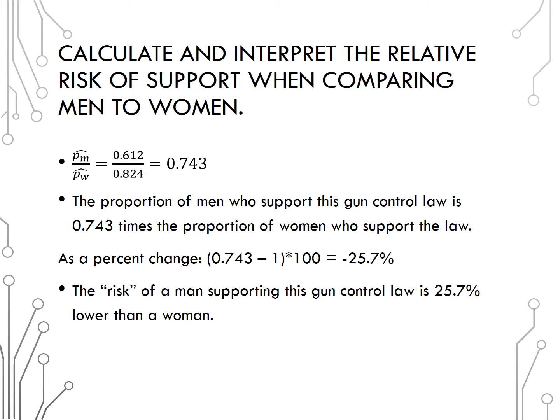Let's calculate and interpret the relative risk of support when comparing men to women. When calculating relative risk as group x compared to group y, you must use the division p hat x divided by p hat y. So in this calculation, the reciprocal would not be correct. In other words, we gave you the order of division in the problem statement by stating we want you to compare men to women. So p hat m divided by p hat w would be 0.743.